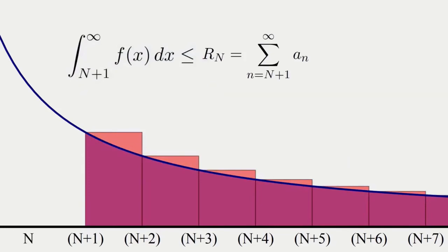Okay, but what about the upper bound? According to the remainder estimate, the integral from n to infinity is supposed to overestimate the remainder. But looking at the picture, it's kind of hard to tell if it really does. That is, it's hard to say if the blue area really is larger than all the red rectangles combined.